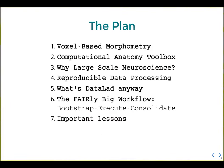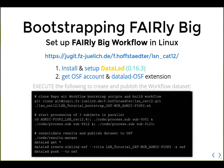The plan for the whole tutorial: first I'll talk briefly about voxel-based morphometry, then the Computational Anatomy Toolbox and what it can do, then why we should do large-scale neuroscience at all. Then I'll discuss reproducible data processing, what DataLad is, and the main part — a fairly big workflow covering bootstrapping, execution, and consolidation of results — followed by important lessons from large-scale neuroscience.